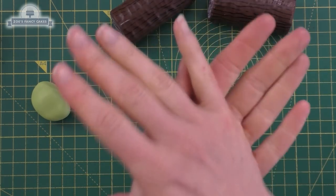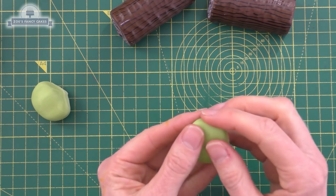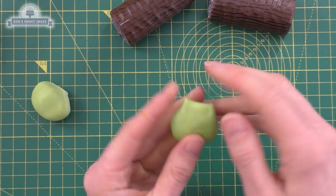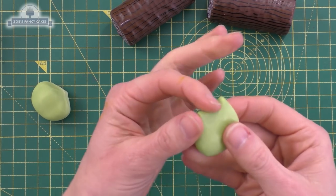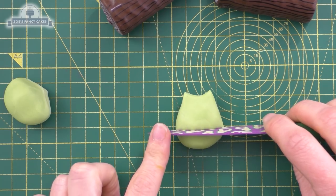Now I've got some green modelling paste. You can use fondant if you prefer - the modelling paste was just a bit firmer for me to use. I'm not sure what shape to describe it as. We start with a circle and kind of squidge it into this shape.